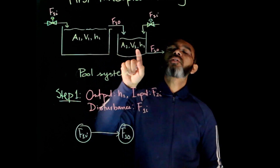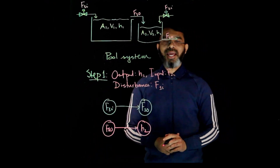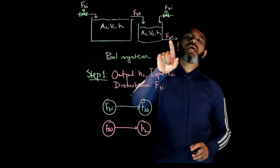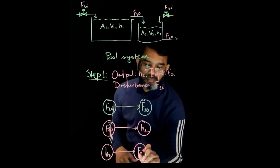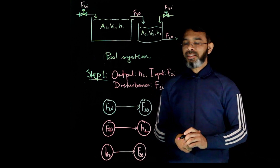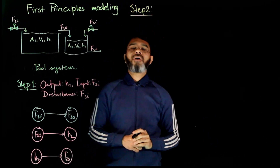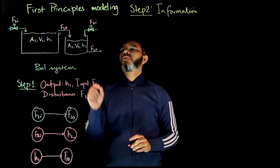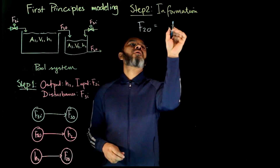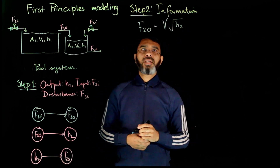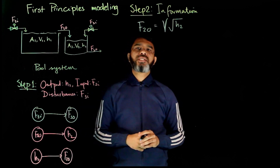When F1O changes, it affects the liquid level in pool two, so there's a link between F1O and H2. When H2 changes, that also affects F2O. All those variables are related, and for these three links we'll have three relations to find. Step two in the five-step approach is to gather information: F2O is due to gravitational force, so F2O equals gamma times the square root of H2. Area, initial flow rates, and other variables can also be collected.